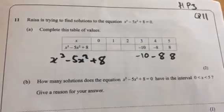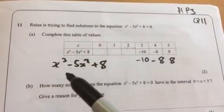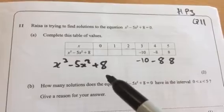We've been given a table of values, x equals 0, 1, 2, 3, 4, and 5, and the function x cubed minus 5x squared plus 8.